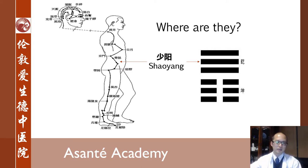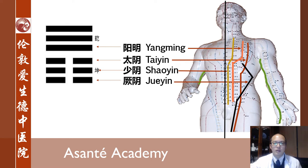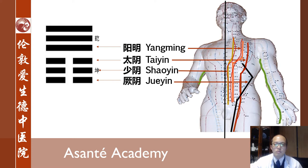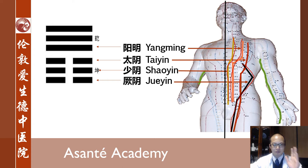This is called the Shaoyang meridian. Except for the Taiyang meridian and Shaoyang meridian, all other four meridians are yin meridians. Yangming meridian, Taiyin meridian, and Shaoyin meridian are all yin meridians located at the front of the human body trunk.